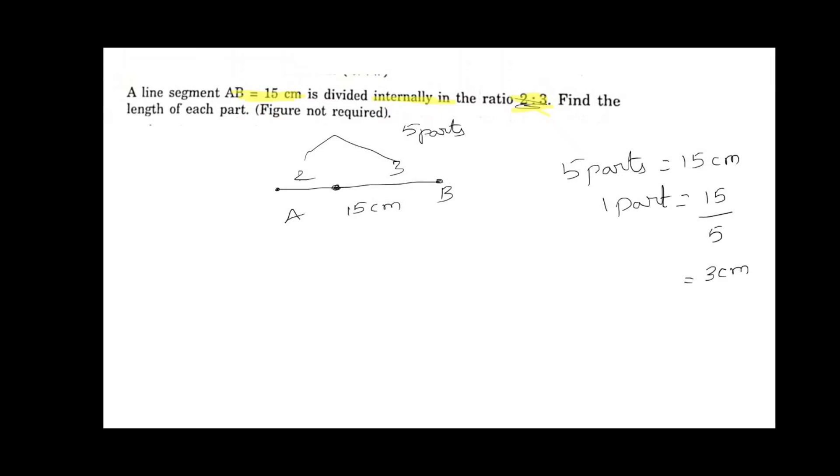We want 2 parts and 3 parts. So 2 parts equals 2 into 3 is 6 centimeters, and 3 parts equals 3 into 3 is 9 centimeters. If you check also, 9 plus 6 gives 15 centimeters. So the answer is correct.